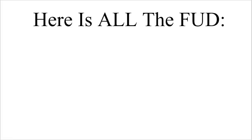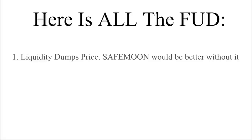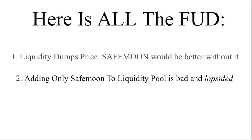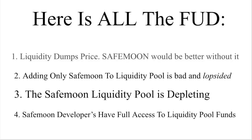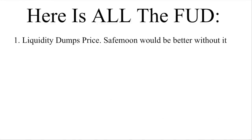The four FUD statements are: number one, SafeMoon's liquidity function dumps the price of SafeMoon by an average of 1.5% daily, and if this function had never existed the price would be over 30% higher than where it is right now; two, the addition of only SafeMoon and not new BNB to the liquidity pool is lopsided and will keep the price of SafeMoon low; three, the SafeMoon liquidity pool is depleting; and four, the SafeMoon developers have full access to the liquidity pool.